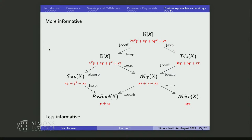There was a mistake in our 2017 paper: instead of describing the arrow from N(X) to B(X) as simply dropping exponents, I said it must be a consequence of idempotency of multiplication. It is, but that's not what's going on, because in TRIO and in Y-provenance, multiplication is not idempotent — think of (X + Y) × (X + Y).